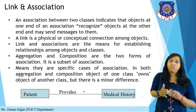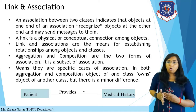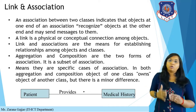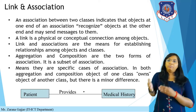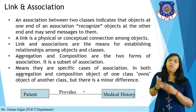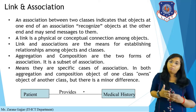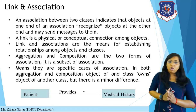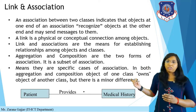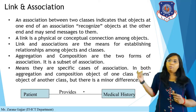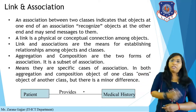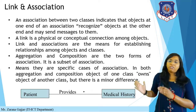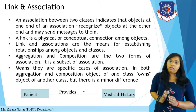Link and association are the means for establishing relationships among objects and classes — how one class relates to another. Aggregation and composition are two forms of association — they are subsets of association. In both aggregation and composition, objects of one class own objects of another class, but there is a minor difference. For example, a patient provides a medical history, so a link is defined between the patient object and the medical history.